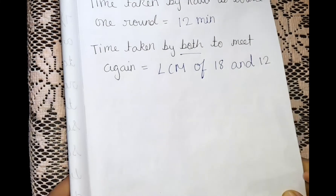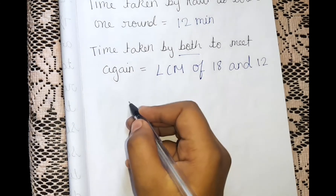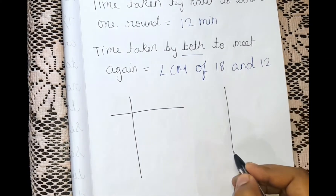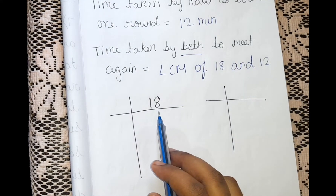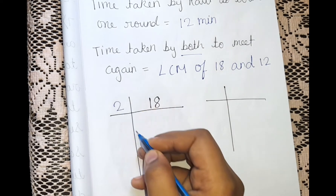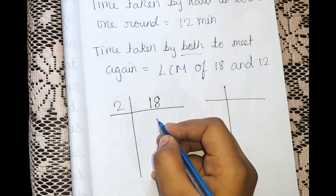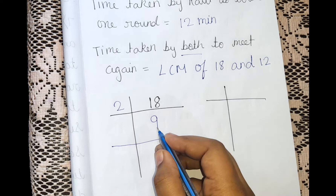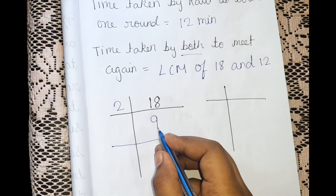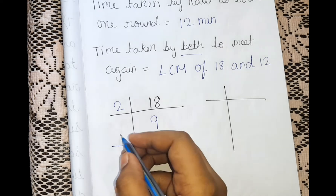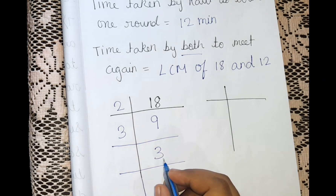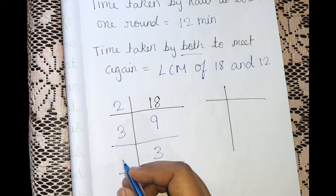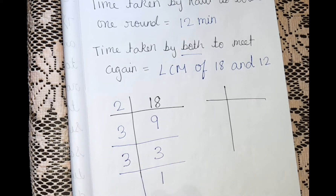Now let's do the LCM of 18 and 12. For 18, the last digit is 8, so we use the 2 times table. 9 twos are 18, so we write 9. Now 9 is not in the 2 times table, so we move to the 3 times table. 3 threes are 9, so we write 3. Then 1 three is 3, so we write 1. We stop here since we've reached 1. So 18 = 2 × 3 × 3.